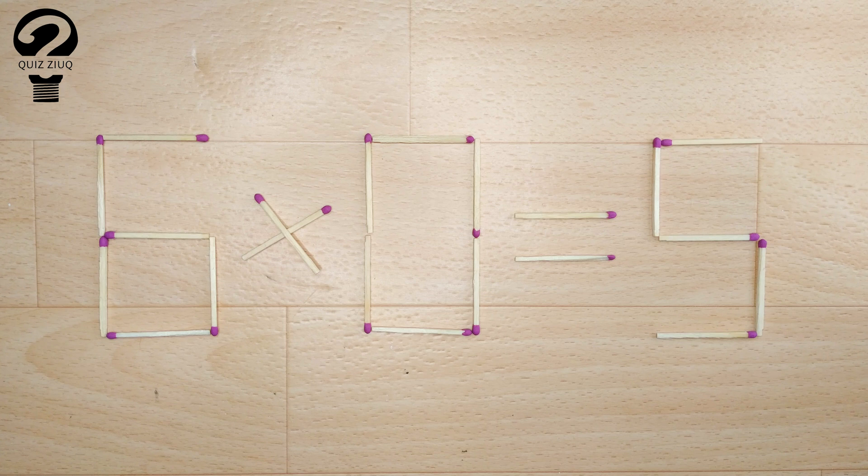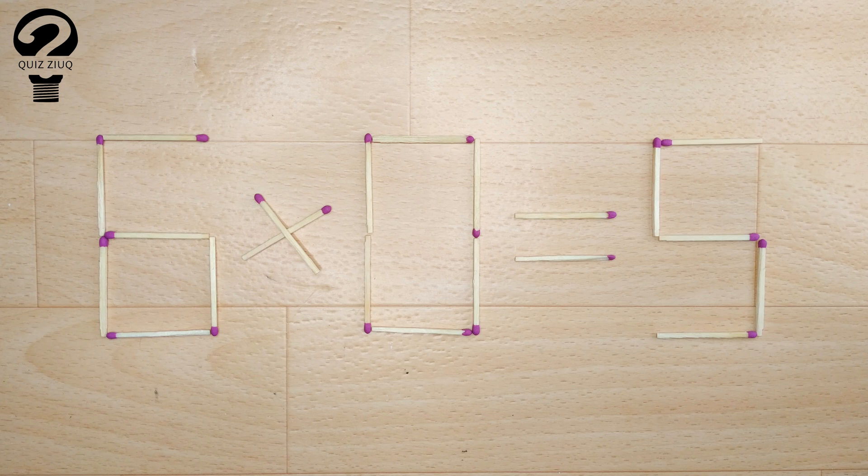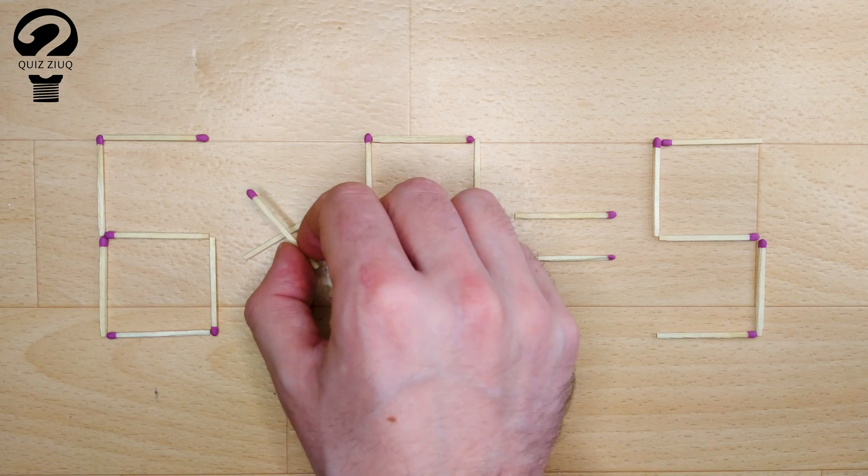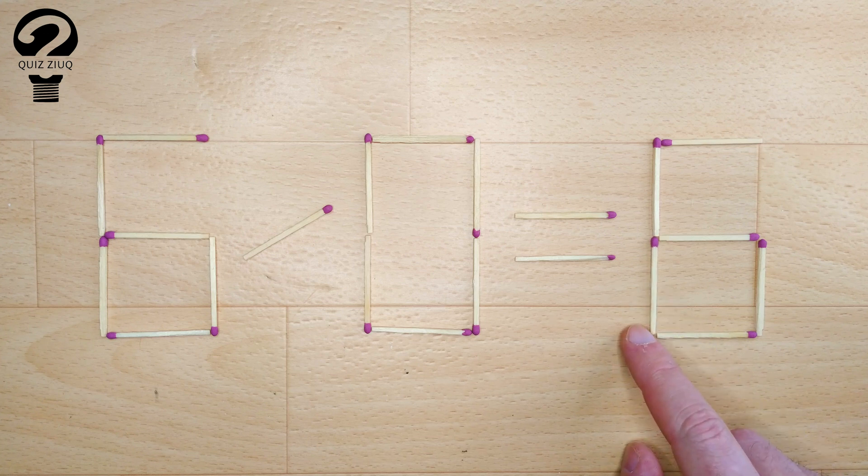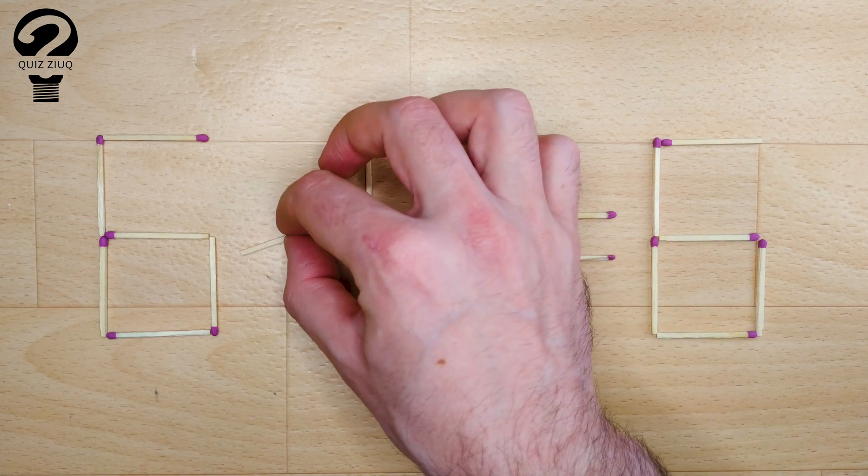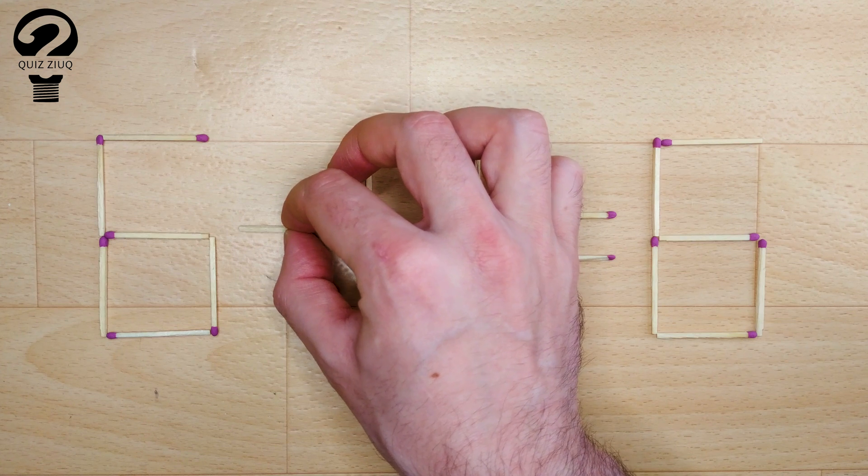How is this little puzzle solved? For this, we just need to move two matches. And now, when we check 6 minus 0 equals 6. 6 equals 6. Our equation is correct. The puzzle is solved.